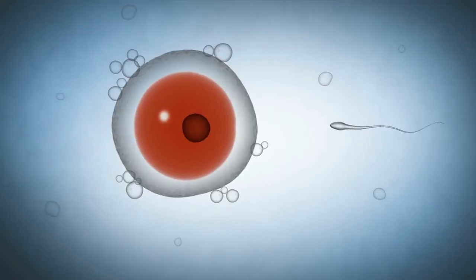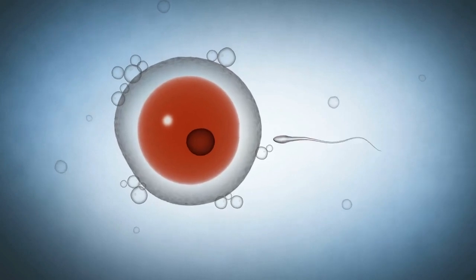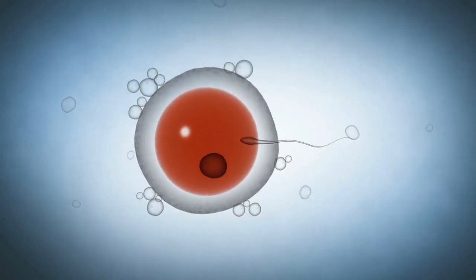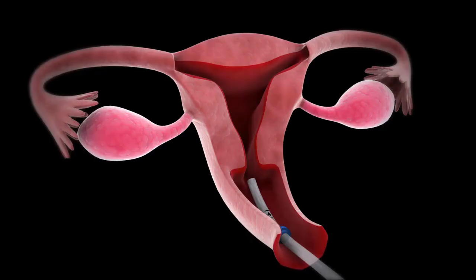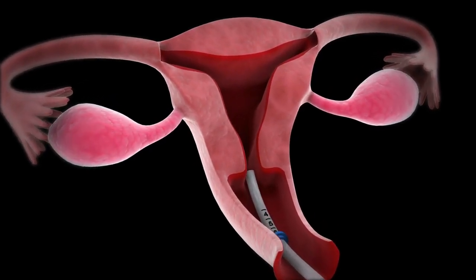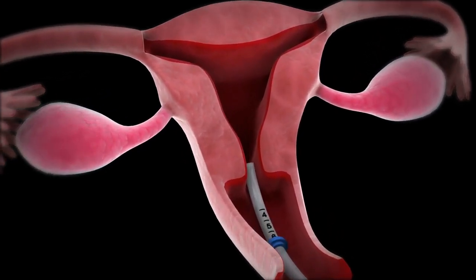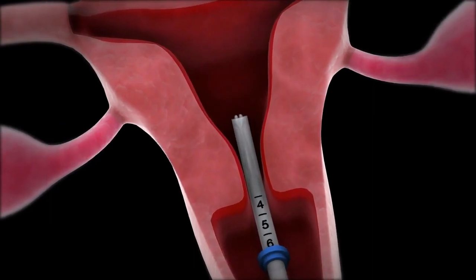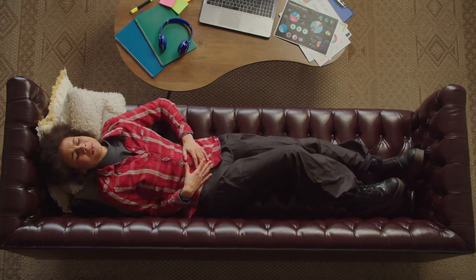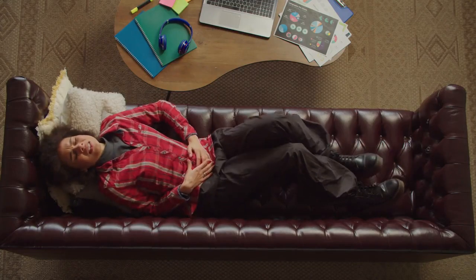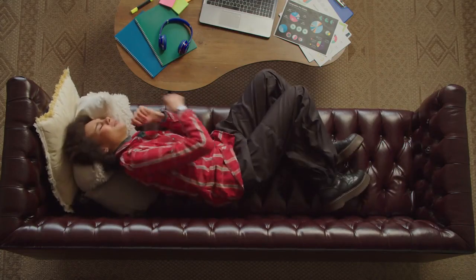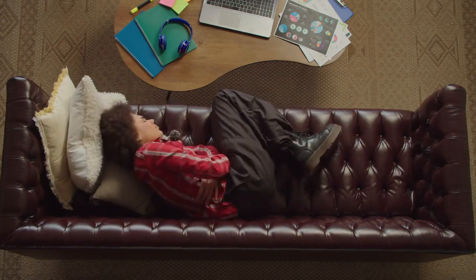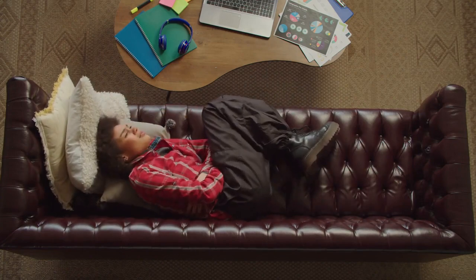The corpus luteum, which was the dominant follicle before ovulation, starts producing progesterone. This hormone thickens the uterine lining even more in order to assist a prospective fertilized egg. Progesterone and estrogen are still being produced by the corpus luteum, which may be the source of premenstrual symptoms including mood swings and breast discomfort.